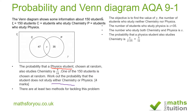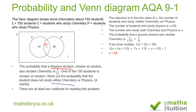When you cross-multiply you end up with 12x equal to 5 into x plus 35. When you expand the brackets you have 12x equals 5x plus 175. Subtracting 5x from both sides gives 7x equals 175. Dividing both sides by 7 gives x equals 175 divided by 7, which gives a value of x equal to 25.